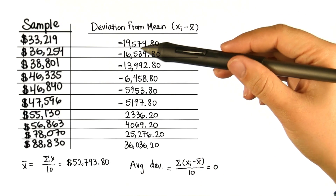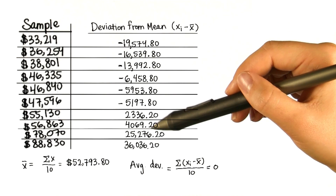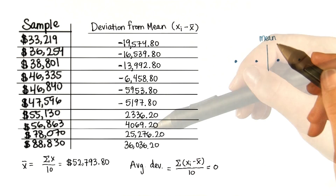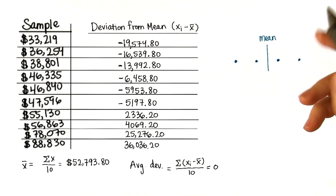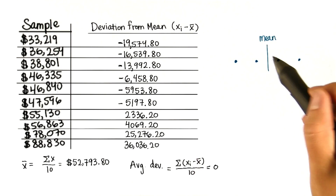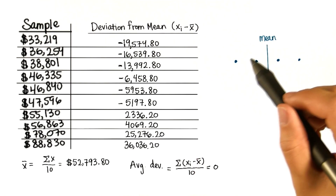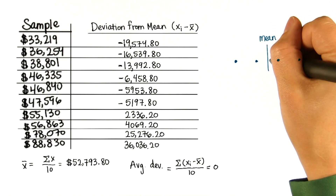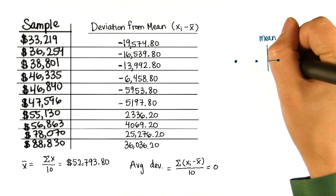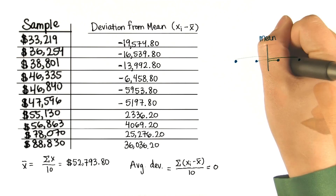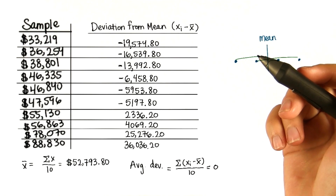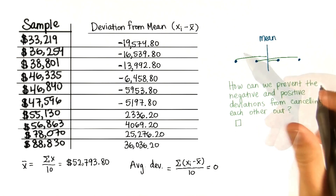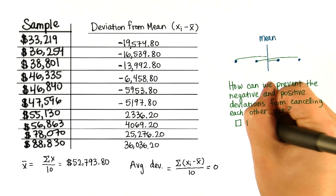The problem is that the negatives are canceling out the positives. When measuring spread, we don't care if our data values are above or below the mean — we just care how far they are from the mean. So how can we make sure that the positive and negative deviations don't cancel each other out?